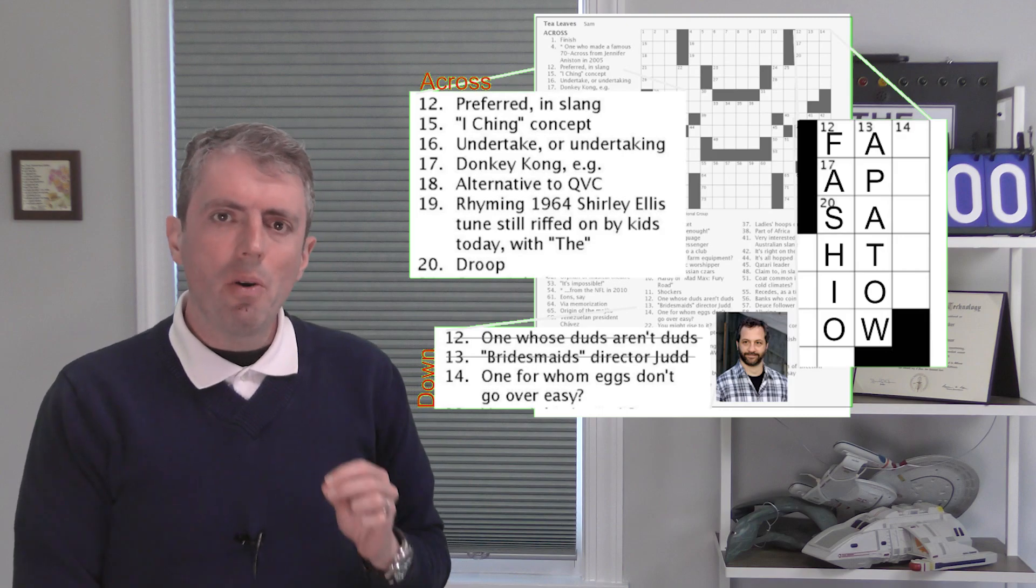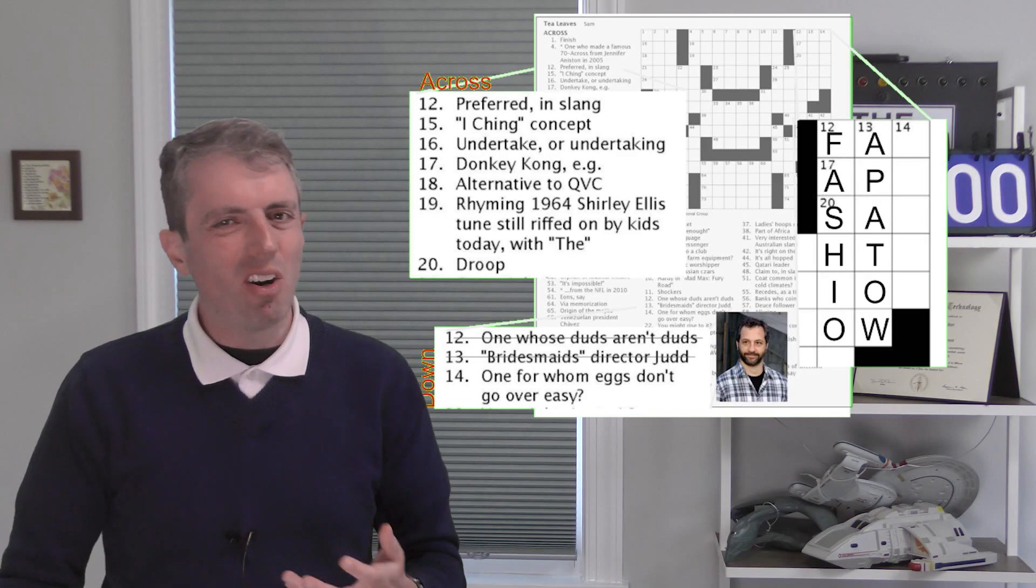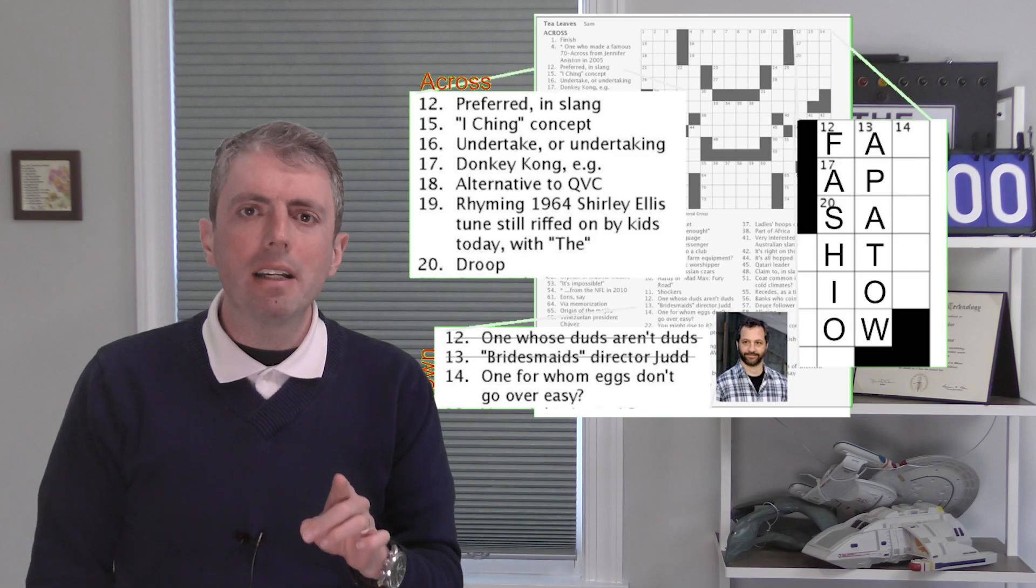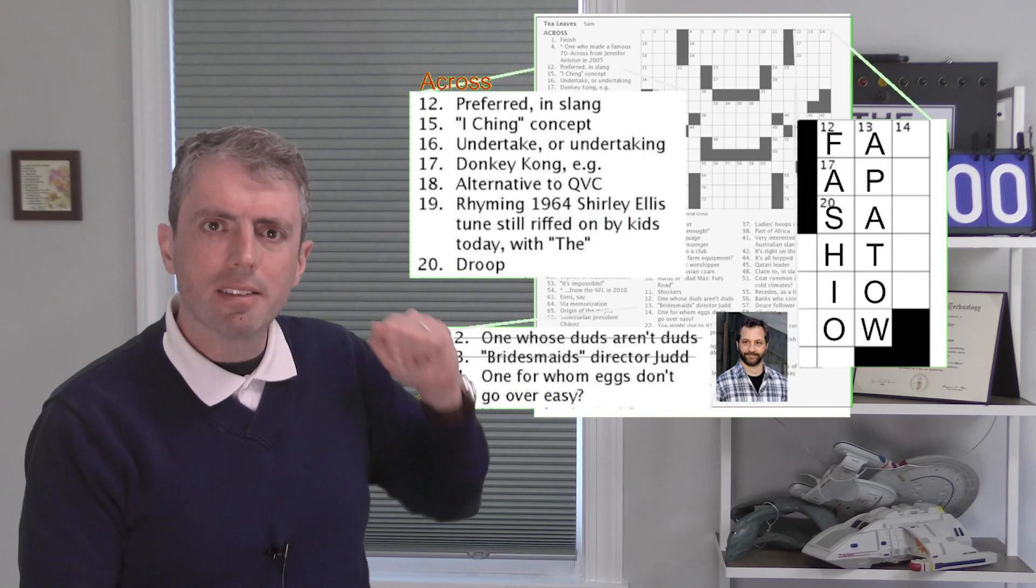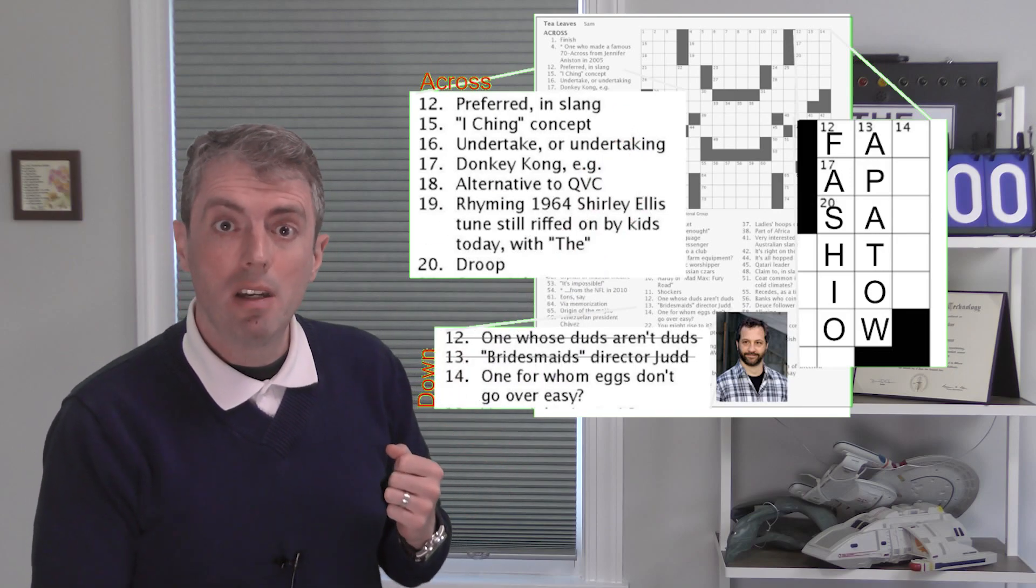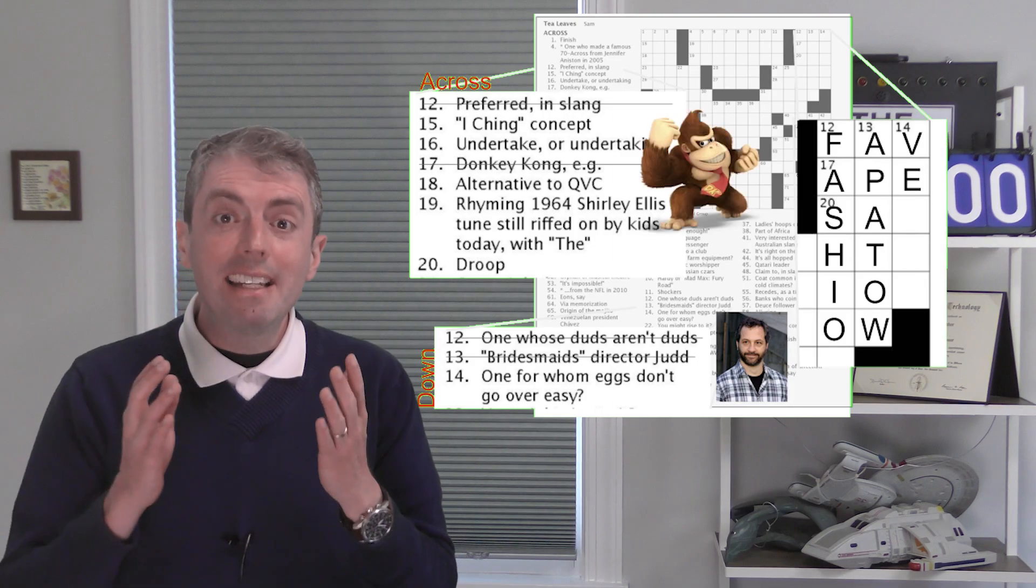I still don't know 13 down. Eggs don't go over easy. They like hard eggs. Yeah, let's move on. Maybe we can get some ideas from the across clues. Preferred in slang starts with FA. That could be FA for FAVORITE. And Donkey Kong is an APE.